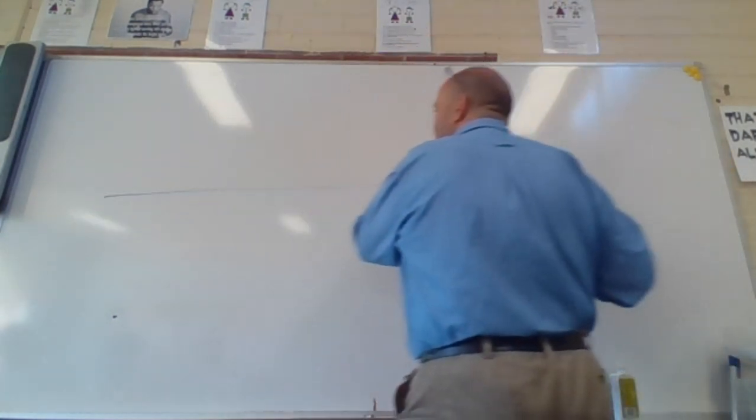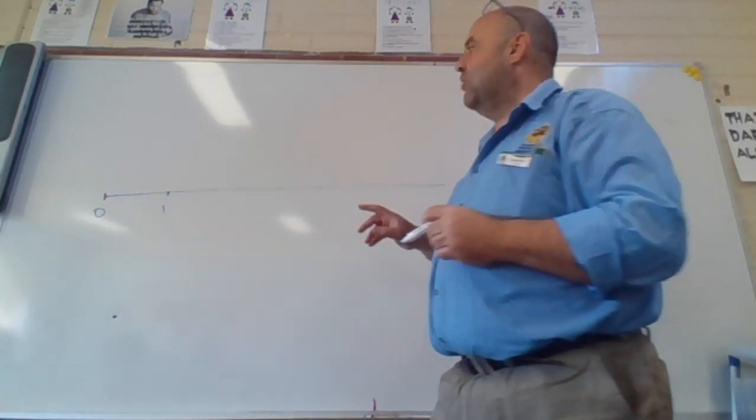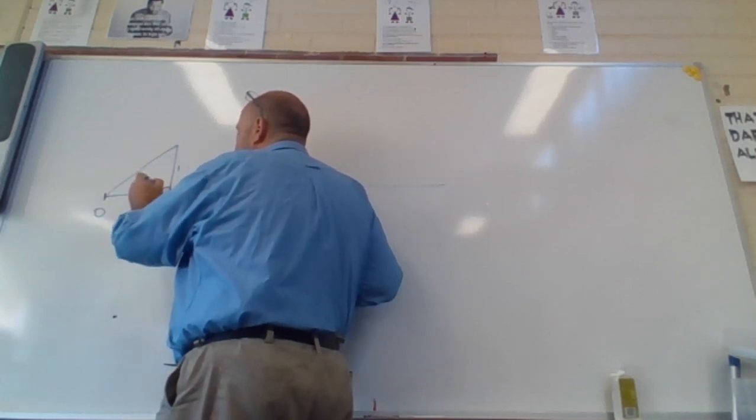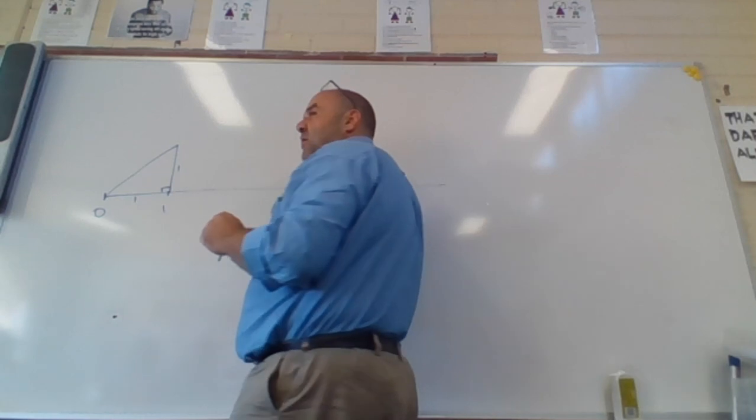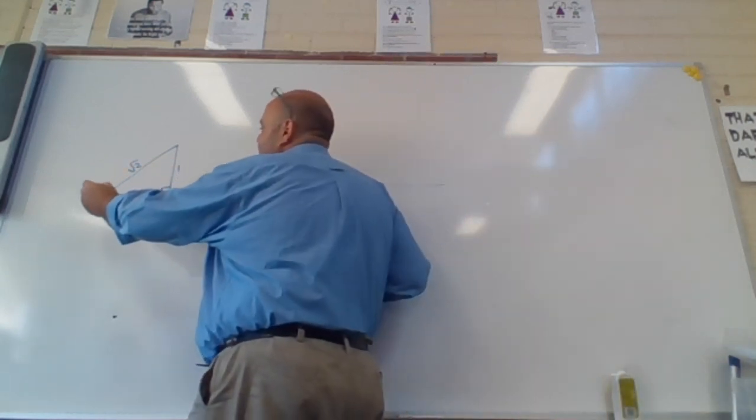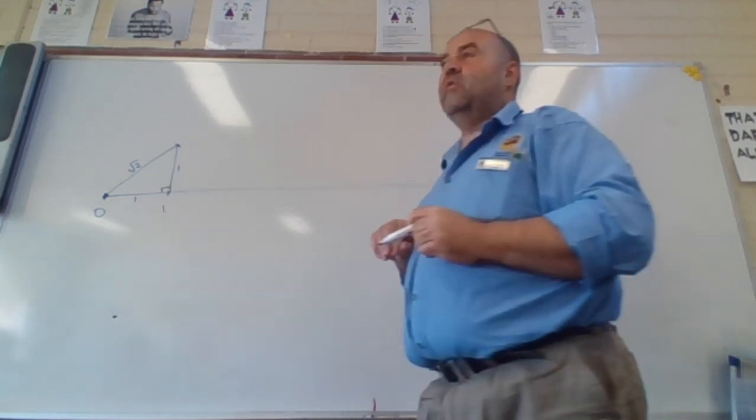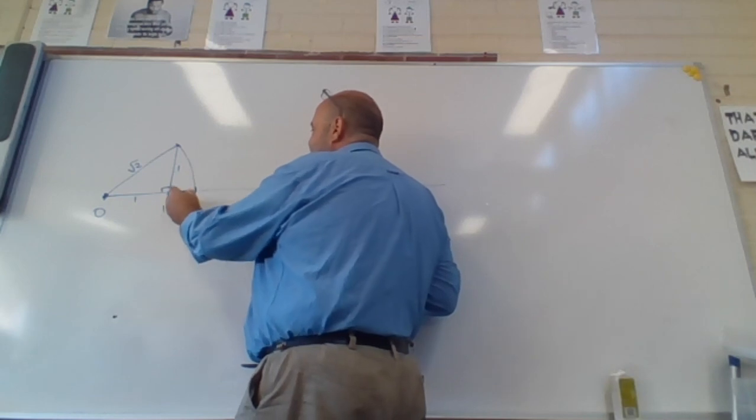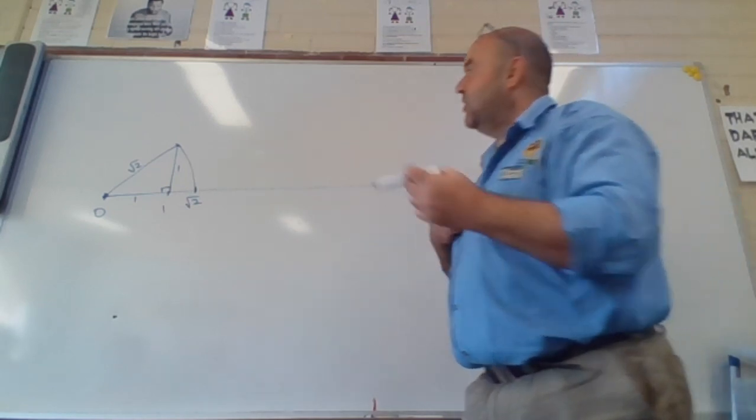Okay, so we're looking at, all this is a number line I had drawn there, but here's my zero on the number line. Here's one unit. If I come across to one unit there and I draw a one unit vertical, then look at this triangle here. That's one unit there, that's one unit there. According to Pythagoras' theorem, this is the square root of one squared plus one squared. That's going to be the square root of two.